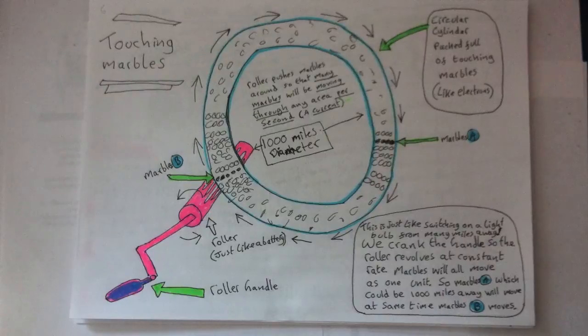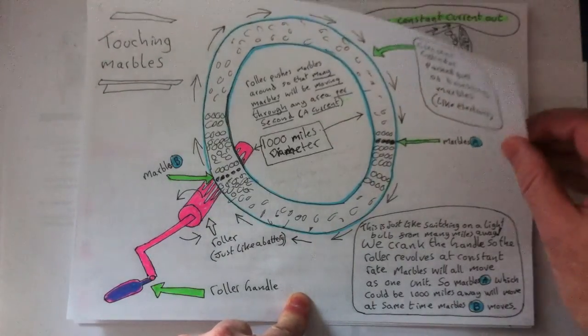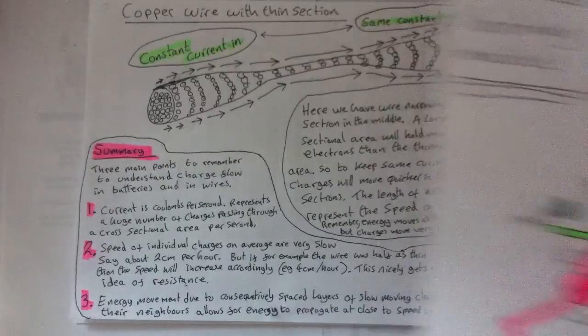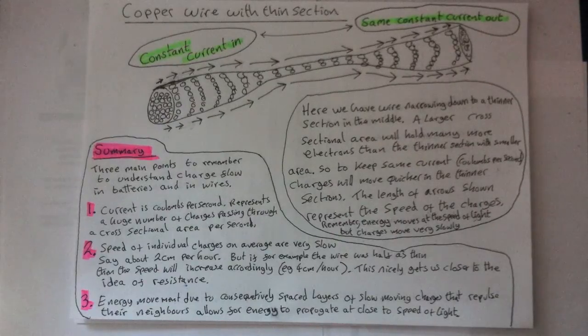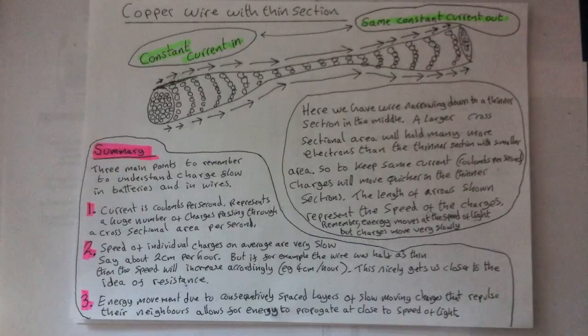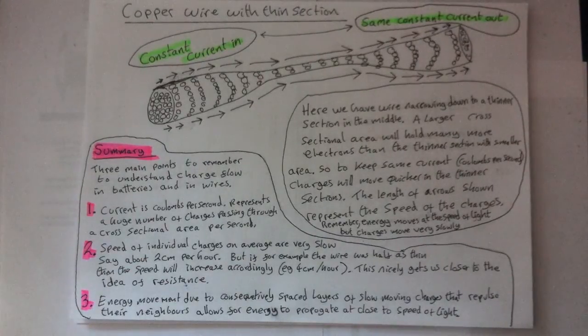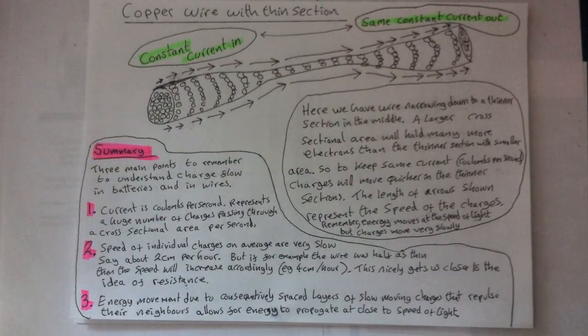What sometimes is surprising when you first find out is the fact that the speed of individual electron-sized charges themselves, average forward progress through the wires of all circuits, is very slow. Their progress is faster, although still slow through thinner wires than wider wires. All charges in wires at room temperature or above will be vibrating, and so will be moving faster in random directions. But their average forward progress is between about 2 to 20 cm per hour.